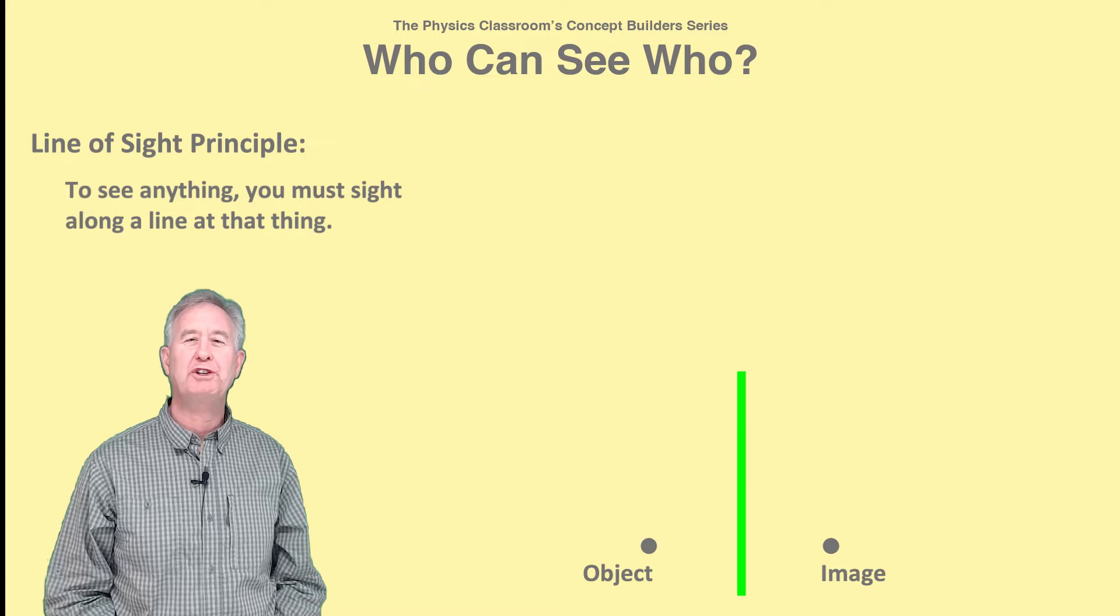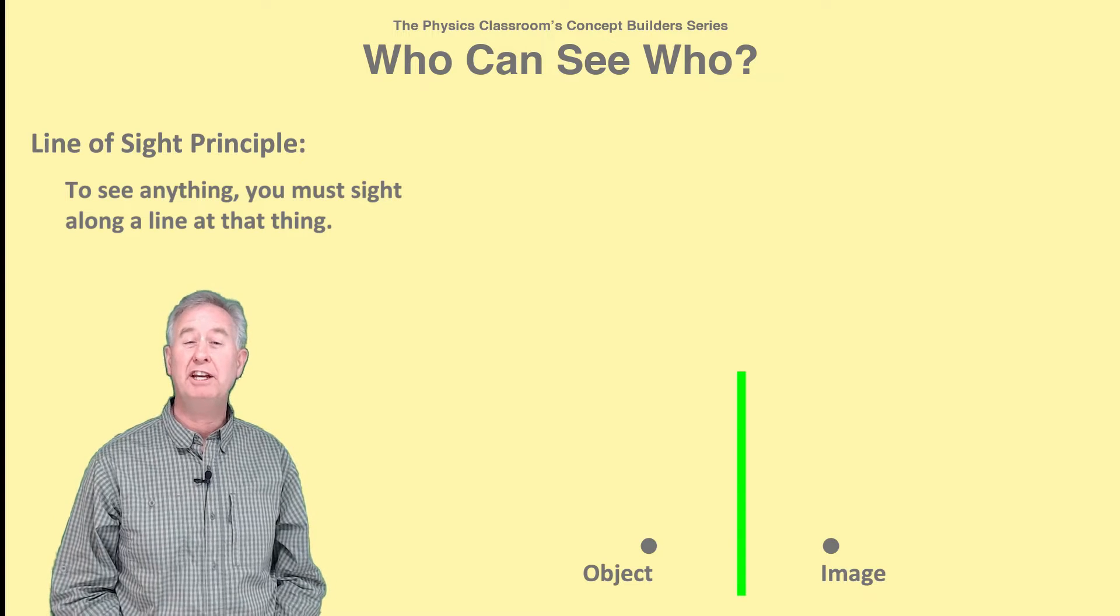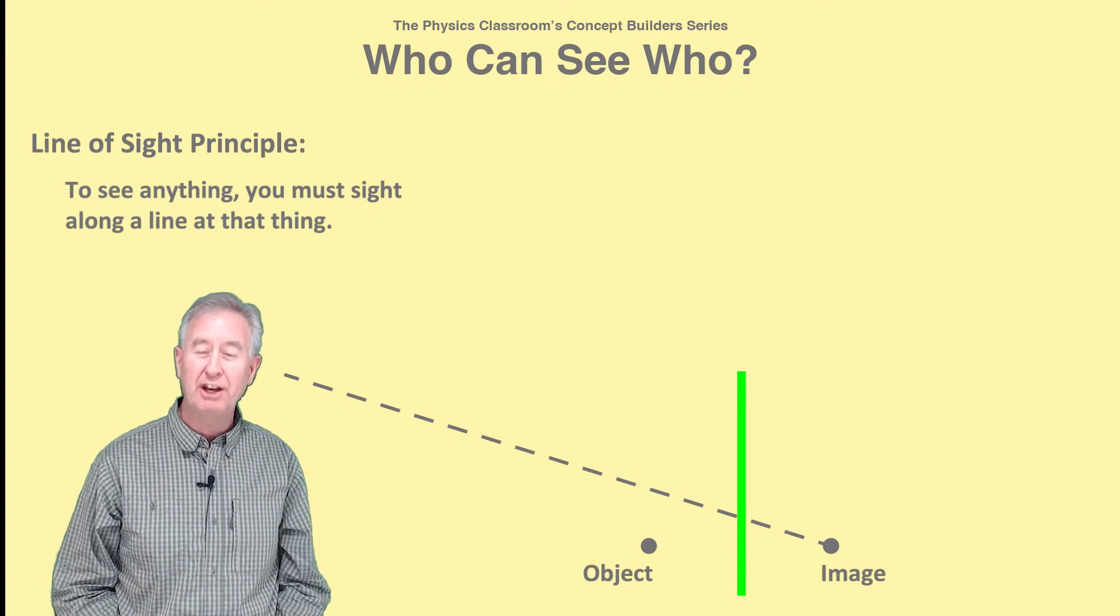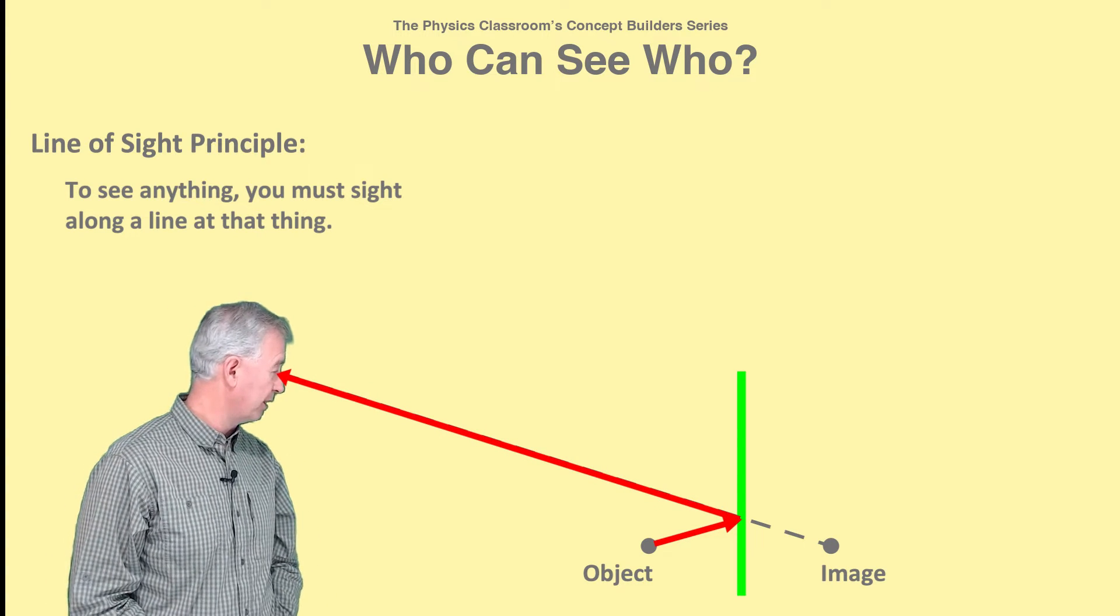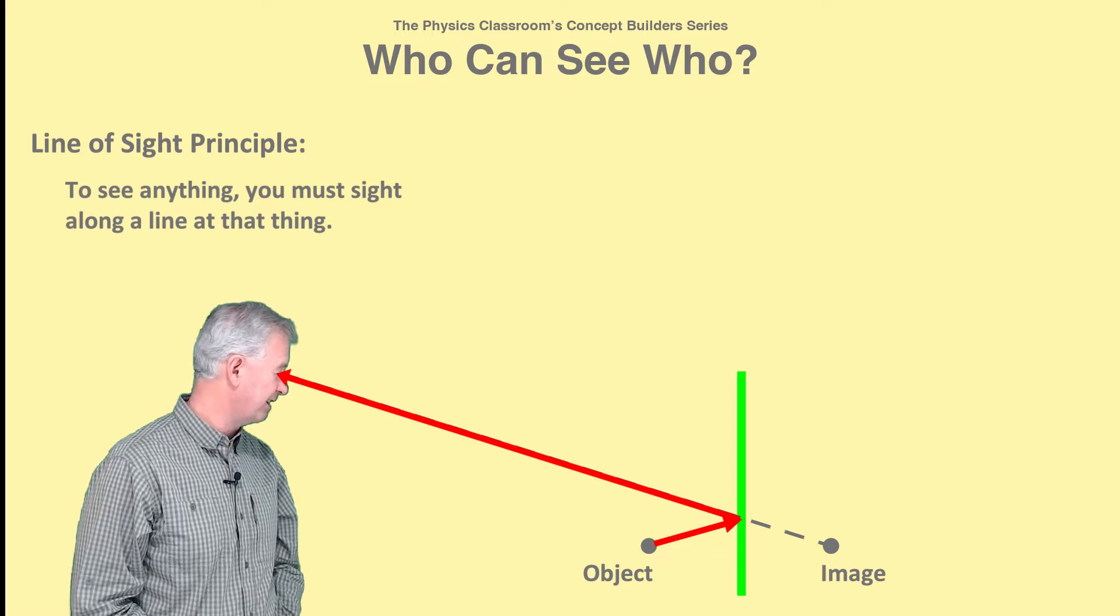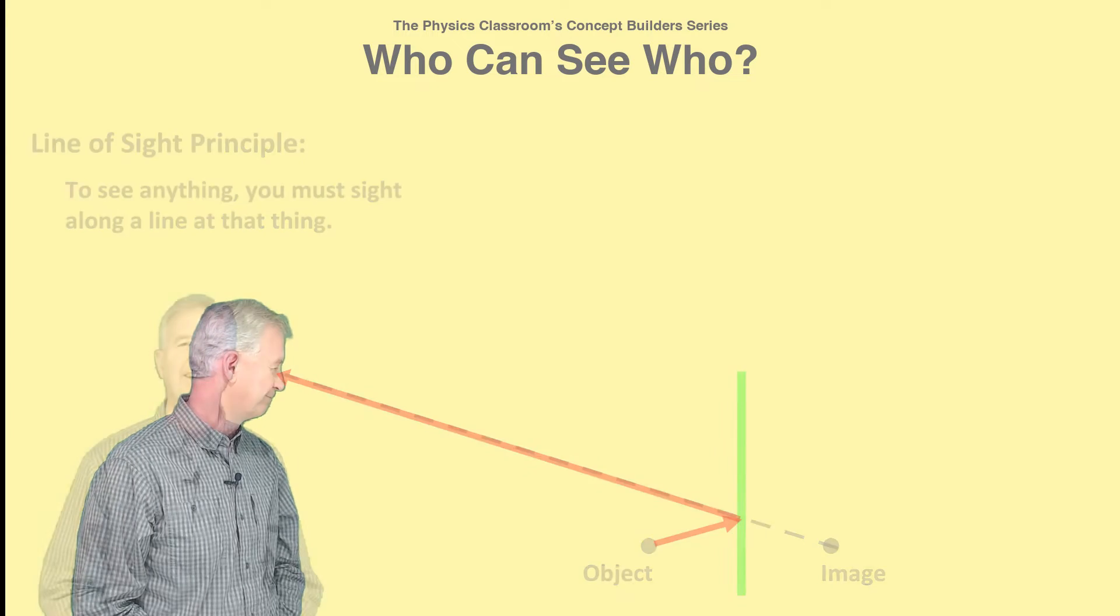And in order to see an object when viewing it in the mirror, I must sight at its image. And when I do, light from the object will reflect off the mirror and travel along my line of sight to my eye.